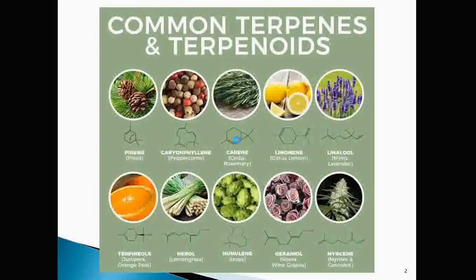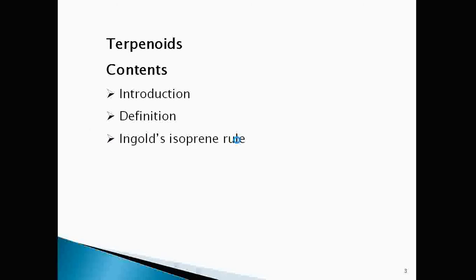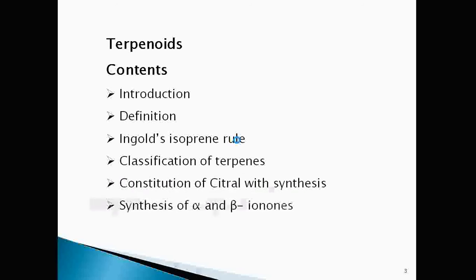Here are some common terpenes and terpenoids along with their sources. In this video, we will study about introduction of terpenes, Ingold's isoprene rule, classification of terpenes, constitution of citral along with its synthesis, synthesis of alpha and beta ionones and synthesis of terpenoids.